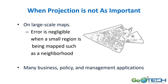When the projection is not as critical, it's really on large scale maps — a small area with a lot of detail. The distortion is negligible for a small region such as a neighborhood. Cities, businesses, and policy and management applications often show just a very small area, and so you're okay.